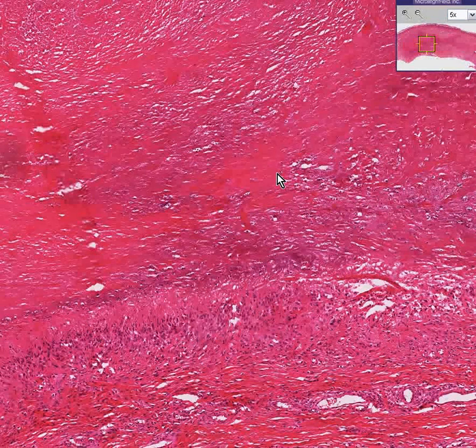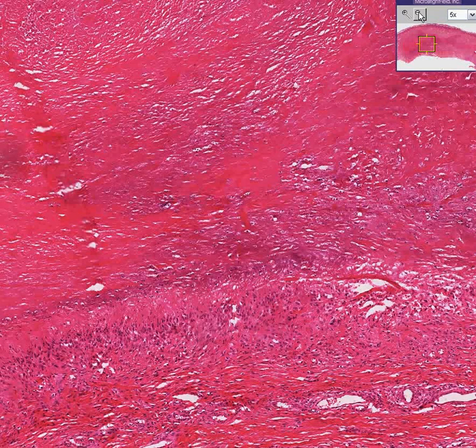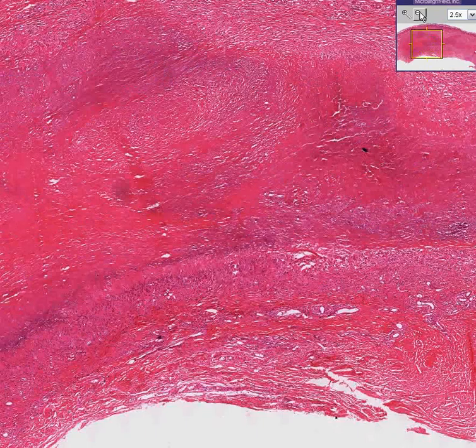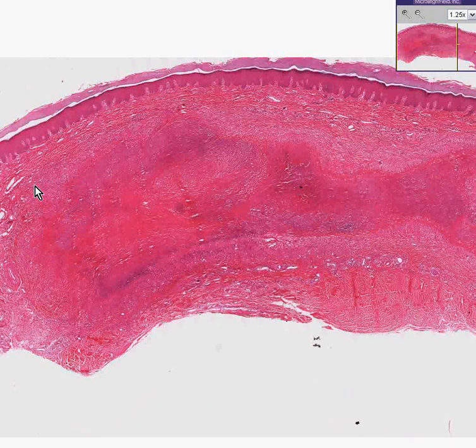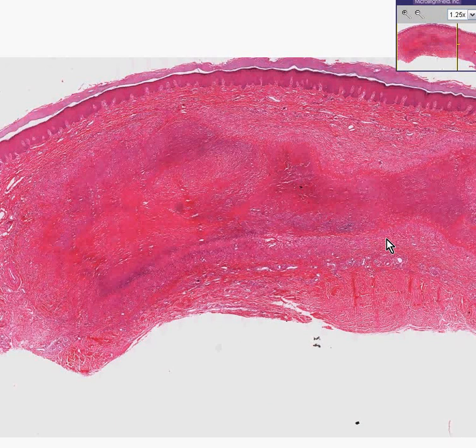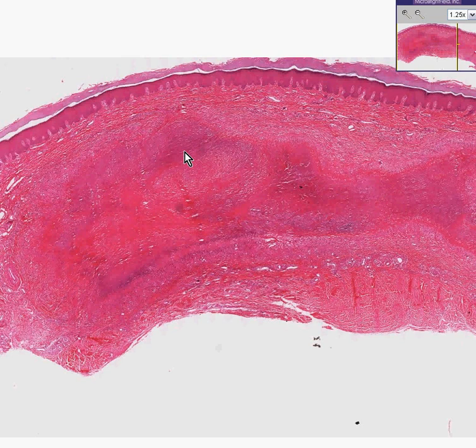Rheumatoid nodules can be seen in people that have rheumatoid arthritis. They can be seen in people that have rheumatoid arthritis in which there is no connection or association of these things with the joints themselves. They can be seen in the lung. They could be seen in soft tissues. In this one, you're looking into the skin and subcutaneous area.